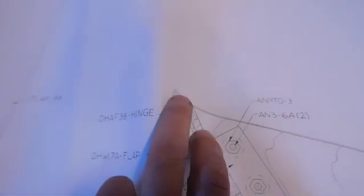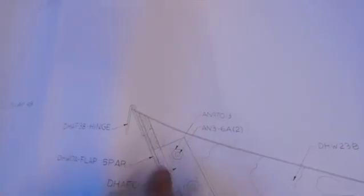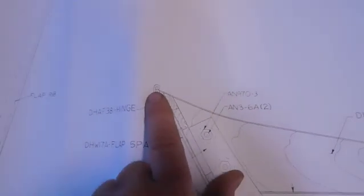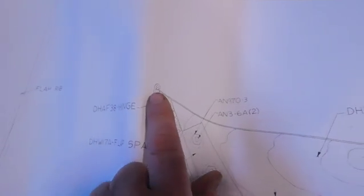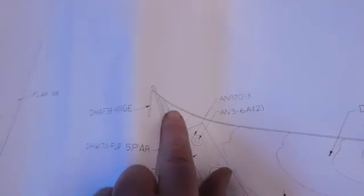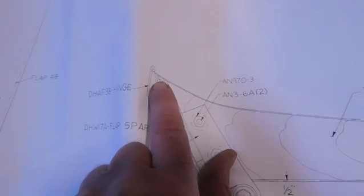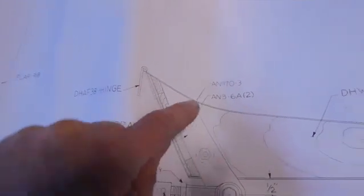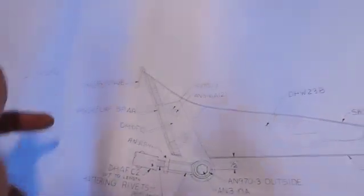that the hinge, and specifically the hinge, whatever they call it, the hinge pin, has to be above the plane of the wing, the top plane of the wing. So that flap can flip right on top.